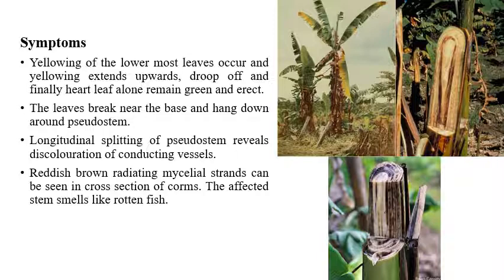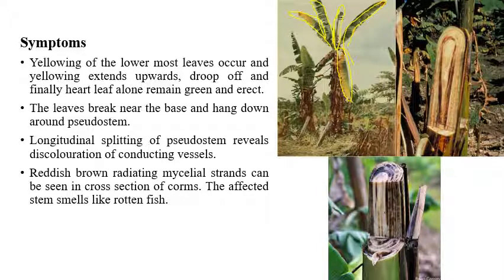Coming to symptoms of Fusarium wilt: yellowing of leaves can be seen. All the leaves turn yellow and droop or fall down from infected plants, but the heart leaf remains erect and green. The remaining leaves are yellow in color, breaking down and hanging down from the pseudostem, except the heart leaf which stays green and erect.